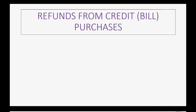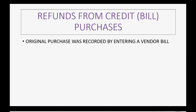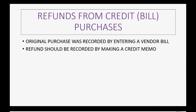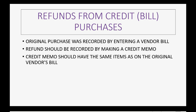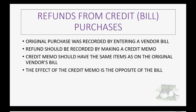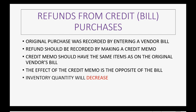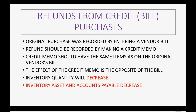Let's discuss refunds from credit purchases first. These are purchases when you recorded a bill when you got the merchandise. With the bill, the refund should be recorded by making a credit memo. The credit memo should have the same items as the original vendor's bill. The effect is the exact opposite of receiving the bill: the inventory quantity will decrease because you have fewer items available for sale, and the inventory asset will also decrease. Because you're returning something paid for on credit, your accounts payable will also decrease.